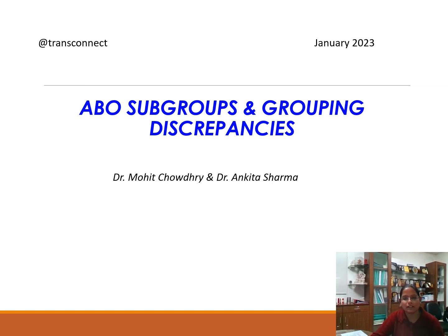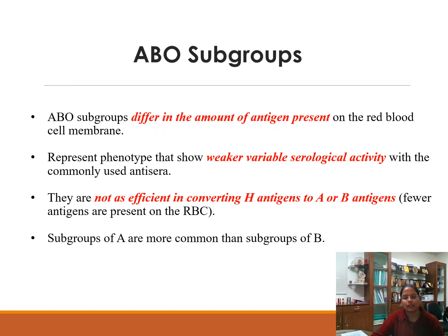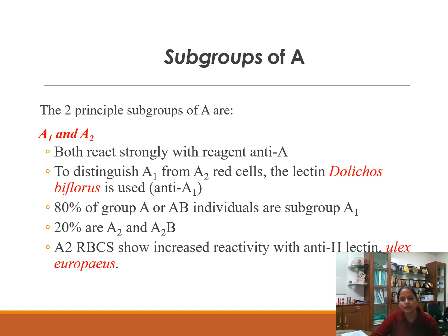ABO subgroups differ in the amount of antigen present on the red cell membrane — there is a variation in the expression of antigens. They represent a phenotype showing weaker, variable serological activity with commonly used antisera. These subgroups are not very efficient in converting H antigens to A or B antigens, and subgroups of A are more common than those of B.